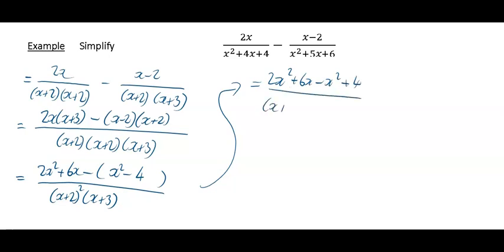Still all over (x+2) squared (x+3), which works out to be 2x squared minus x squared is just x squared on the top line plus 6x plus 4, and then you have (x+2) squared (x+3).